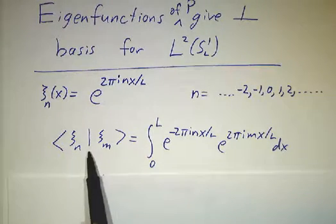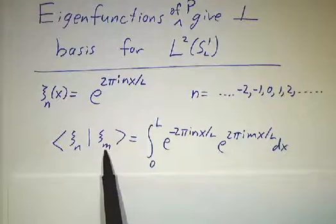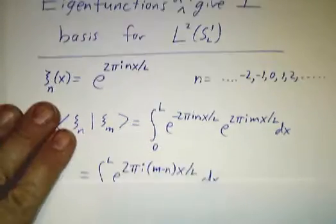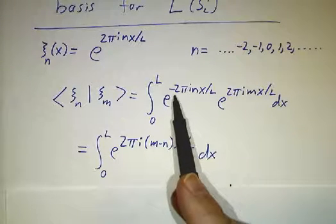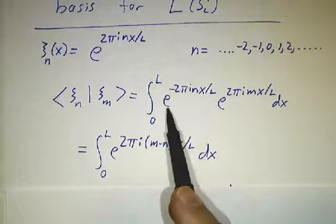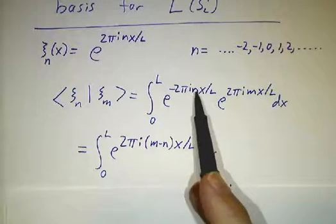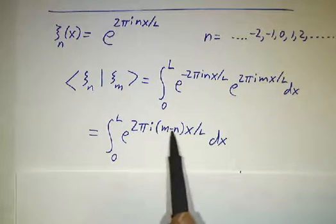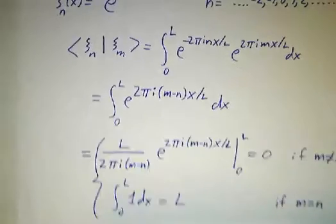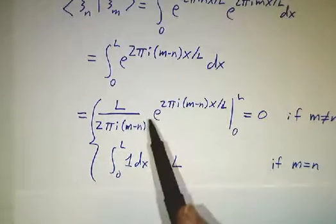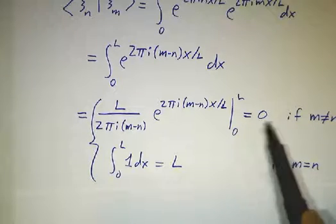And you can check directly that they're orthogonal. The inner product of ψ_n with ψ_m is this integral. You take e to the 2π n over L bar, which is e to the minus 2π n over L. You conjugate the i. And that's e to the 2π (m minus n) x over L. And if m is different from n, you just do the integral and you get something which when you apply it at the two end points, gives you the same value. And so you get 0.